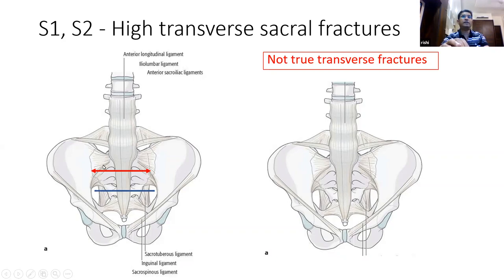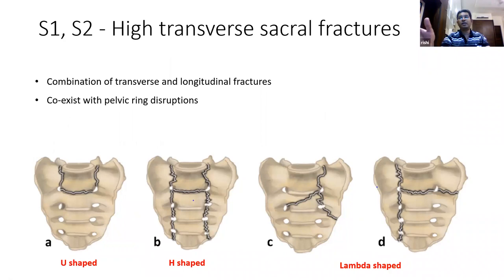Regarding the unique aspects of high transverse fractures: with a low transverse fracture below the sacroiliac joint, the fracture line has space to extend and displace. But with a high transverse fracture at the level of the sacroiliac joint, the transverse fracture line cannot exit through the pelvis or through the ilium on either side. So it naturally finds its exit through longitudinal fracture lines over the sacral ala. This is how a typical high transverse fracture is formed — a transverse component at S1 or S2 level that extends and exits out of the sacrum through the sacral ala. It is a combination of transverse and longitudinal fractures, but the main instability is determined by the transverse component.